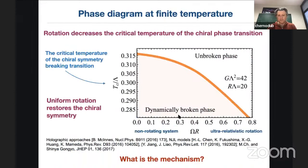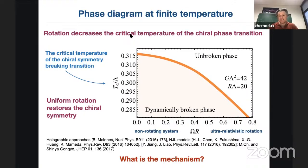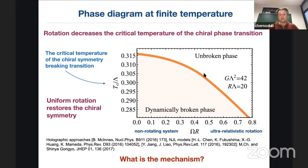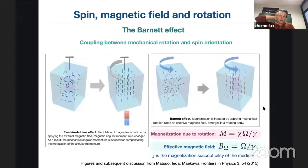At Ω = 0 and low temperature, we have dynamically broken phase with non-zero chiral condensate. At high temperature, thermal fluctuations restore chiral symmetry, in agreement with QCD. Rotation produces the same effect: at fixed temperature, increasing rotation drives the system to the unbroken phase. The unbroken phase can be associated with quark-gluon plasma, and the broken phase with the hadronic phase. So the phase boundary decreases with rotation.